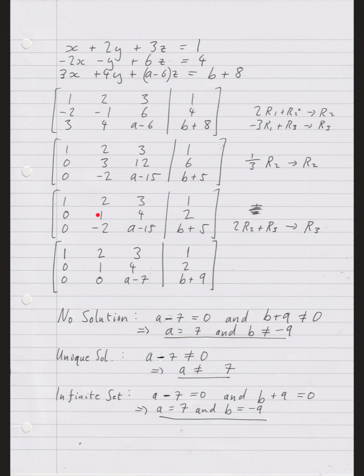Next step is to get a zero in the (3,2) position. To do that I'll add twice that one onto the minus two: two times row two added onto row three. So minus two plus two is zero; a minus fifteen plus two times four (which is eight) is a minus seven; b plus five plus four is b plus nine. The elimination stage is now done.